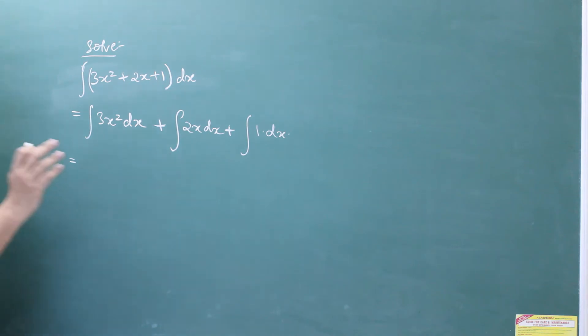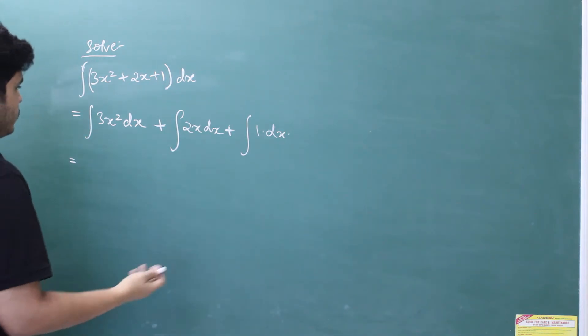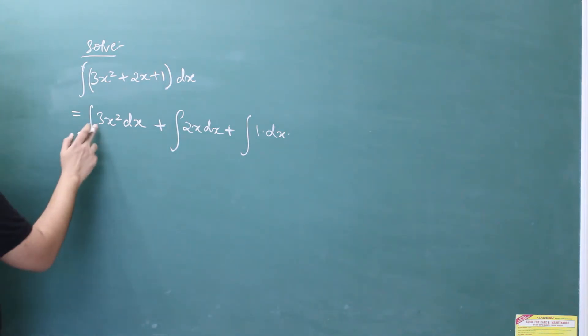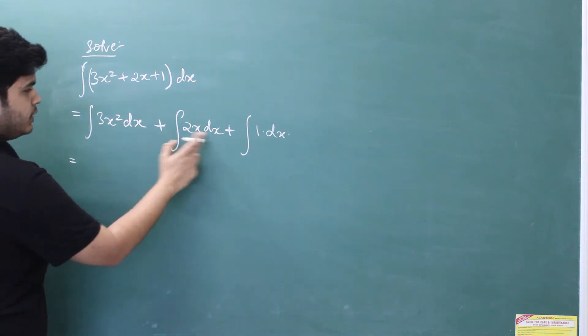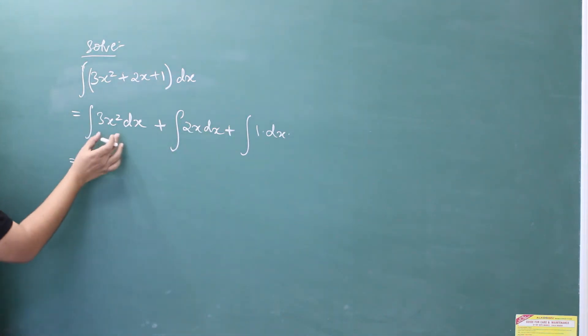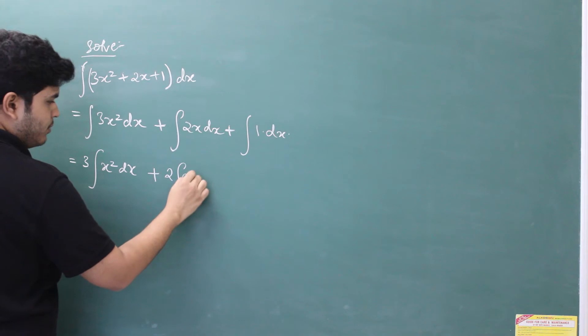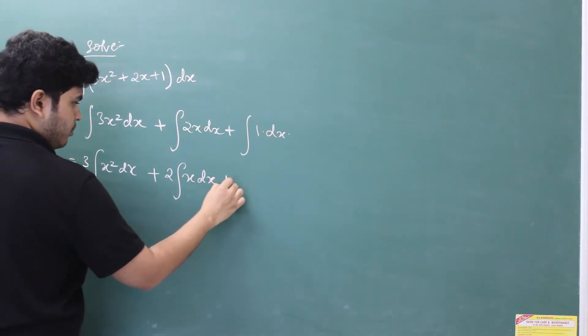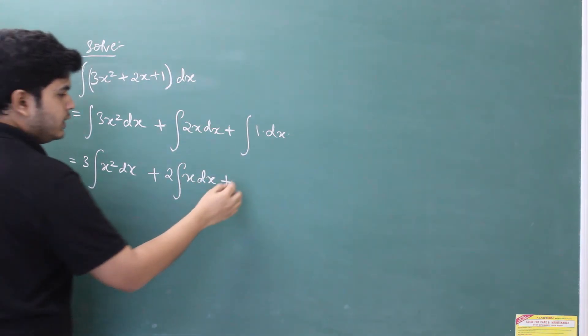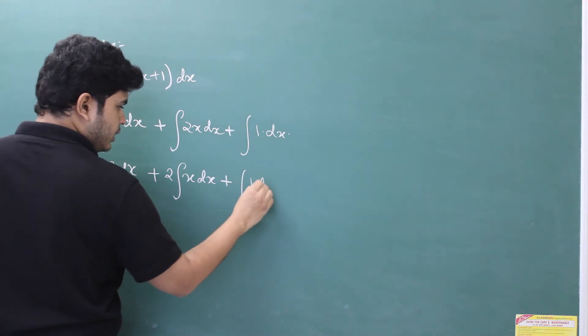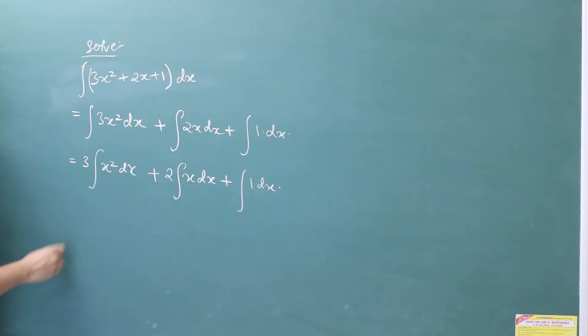Now the next step is to keep the constant outside the integral sign. In first term, the constant is 3 and my variable is x squared. So I'll keep 3 outside and inside the integral sign, I'll have x squared dx plus I'll keep 2 outside from the second term and keep x dx inside. Plus 1 is the only thing over here, so write it as it is, 1 dx.